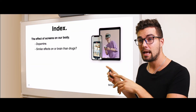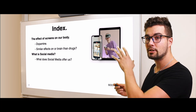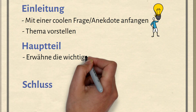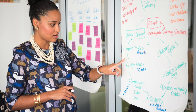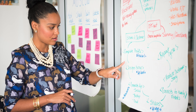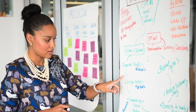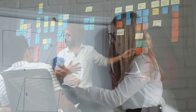Sobald du die Aufmerksamkeit der Zuhörer gewonnen hast, stell dein Thema oder dein Inhaltsverzeichnis vor und entwickle es weiter. Hauptteil: Der Hauptteil ist der Kern der Informationen, die du weitergeben möchtest. Hier solltest du alle themenbezogenen Inhalte und Daten, die du präsentieren willst, erklären. Wenn du viele Informationen hast, aber nicht genug Zeit, um alle zu erwähnen, beginne damit, die weniger wichtigen Punkte beiseite zu lassen.